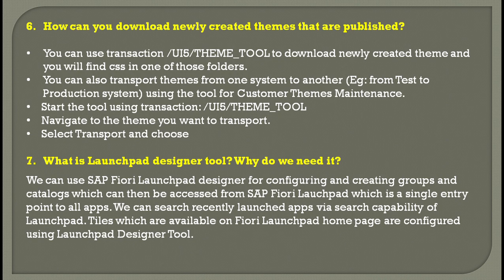The next question is: how can you download a newly created theme that is published? You use the transaction UI5_THEME_TOOL to download newly created themes; you will also find CSS in one of those folders. You can also transport themes from one system to another — for example, from test to production — using the customer themes maintenance tool. Start it with the same transaction code, navigate to the required theme, select it, and transport it.